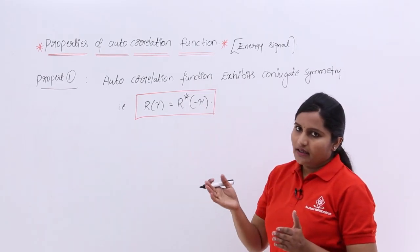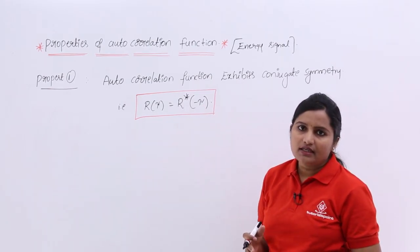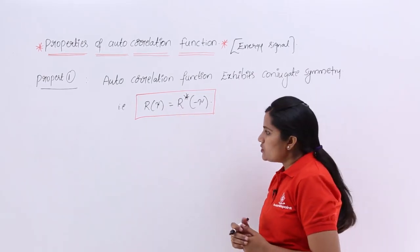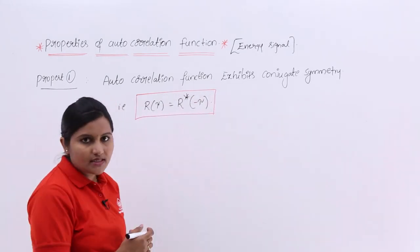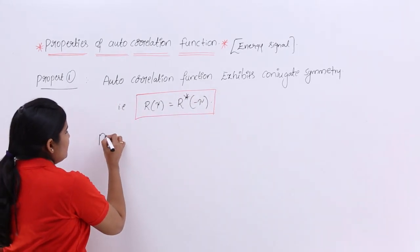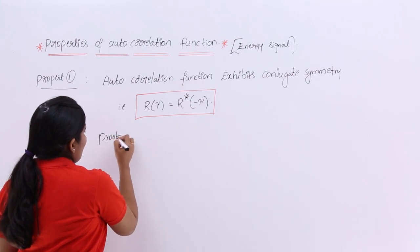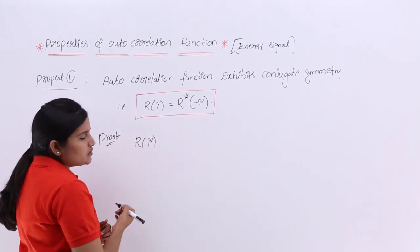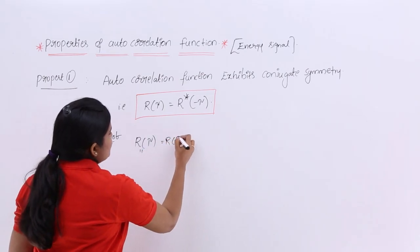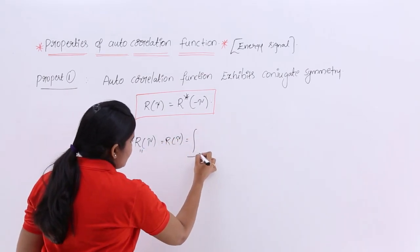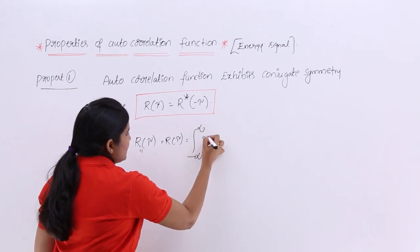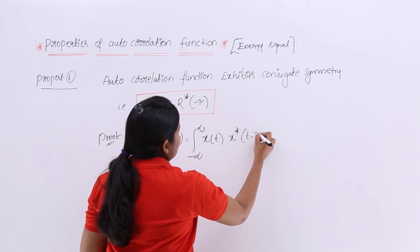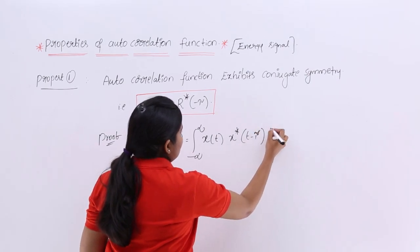To prove this, I want to consider the autocorrelation function formula. So, r₁₁(τ), or r(τ), is equivalent to the integral from minus infinity to infinity of x(t) · x*(t − τ) dt. This is the formula for the autocorrelation function.